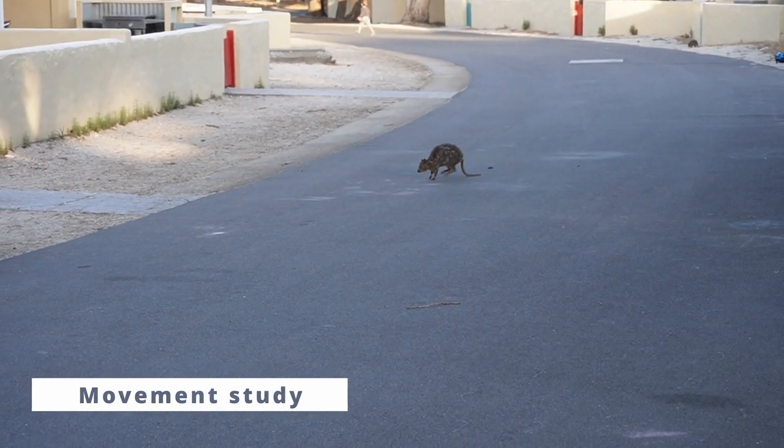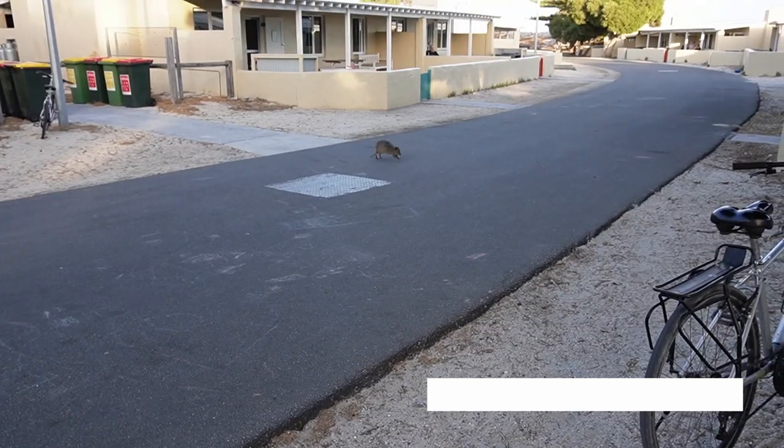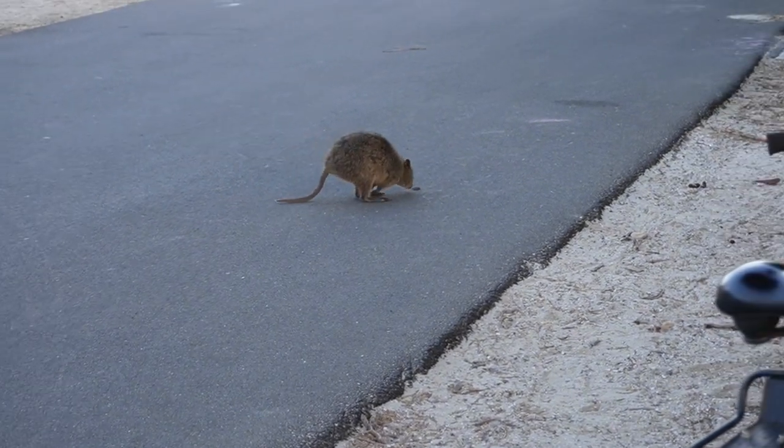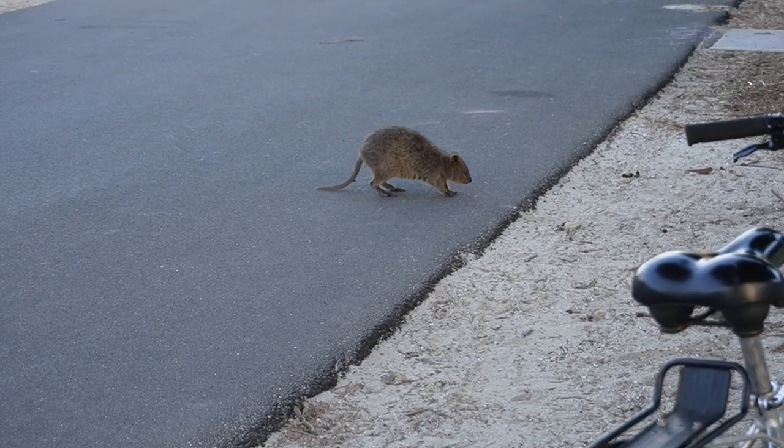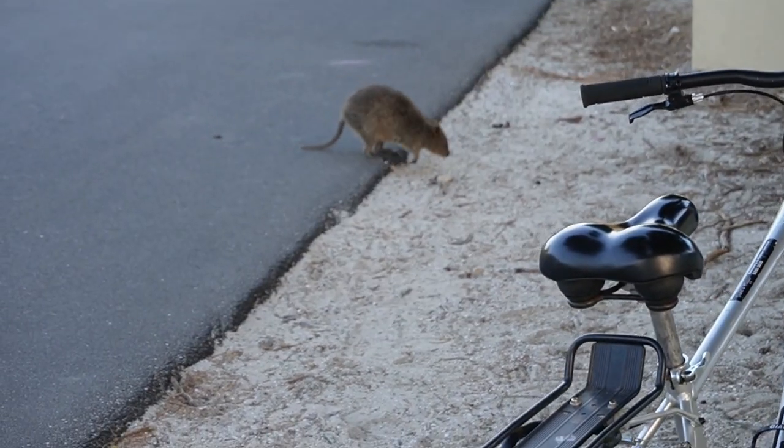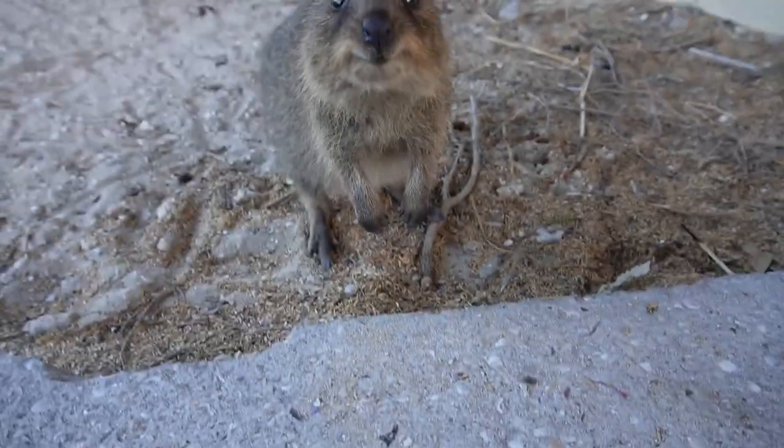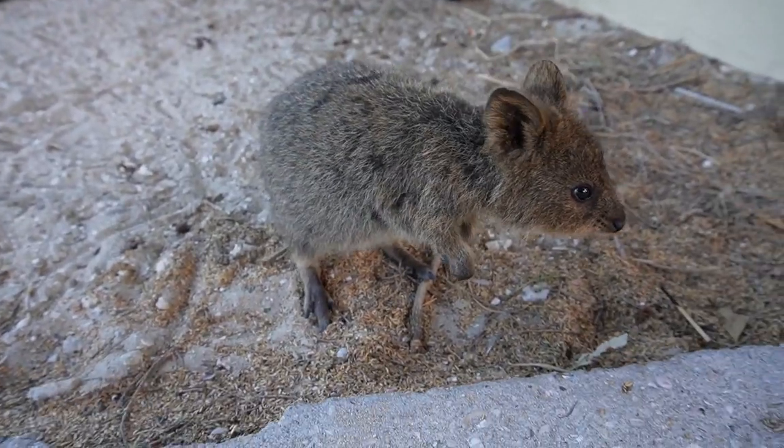Quokkas are macropods, so just like kangaroos and wallabies, they've got huge feet and they can hop. Amazingly, they can also climb trees if necessary. They like to rest on their hind legs and can use their front paws for holding food, like leaves.